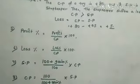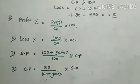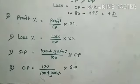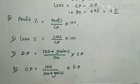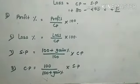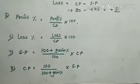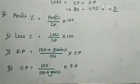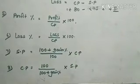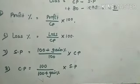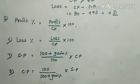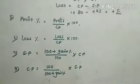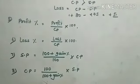Now to find the profit percent, use the formula already given in your books — look carefully. Profit% = (Profit ÷ CP) × 100. Loss% = (Loss ÷ CP) × 100. When a percentage is given: SP = [(100 + Gain%) ÷ 100] × CP. To find CP: CP = [100 ÷ (100 + Gain%)] × SP.